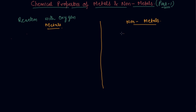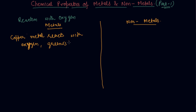Let me take the example of copper metal. As you all know, when copper metal reacts with oxygen, you have all seen that there comes a greenish layer — a greenish deposit — on the surface of copper.